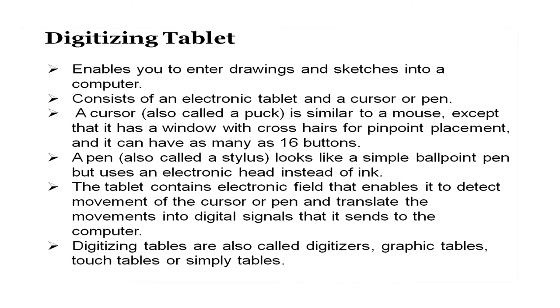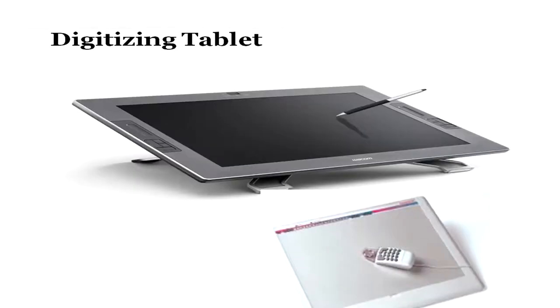The next device is the digitizing tablet — it helps us enter drawings and sketches into a computer. It is a tablet with a cursor and a pen, where the cursor works like a mouse and the pen works like a stylus. You can draw directly on the screen. The tablet also has a mouse-shaped puck to choose between various options. It is a very useful device for designers who want to draw digitally rather than on paper and then scanning it.